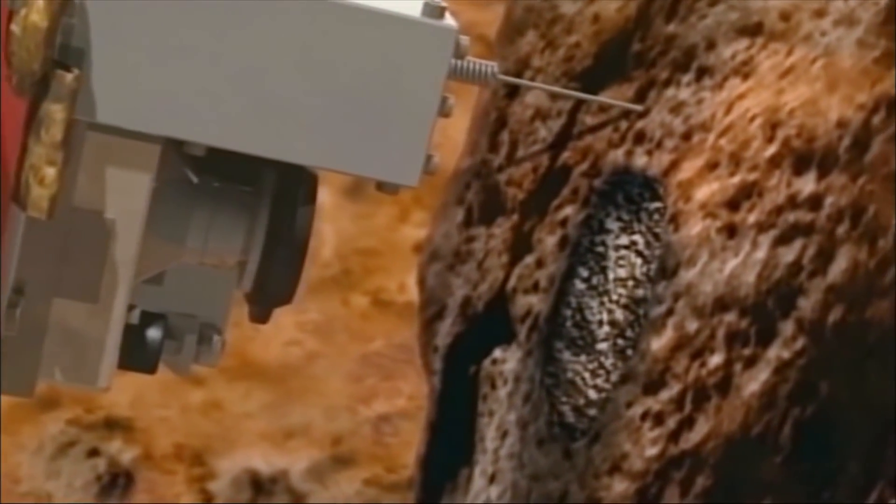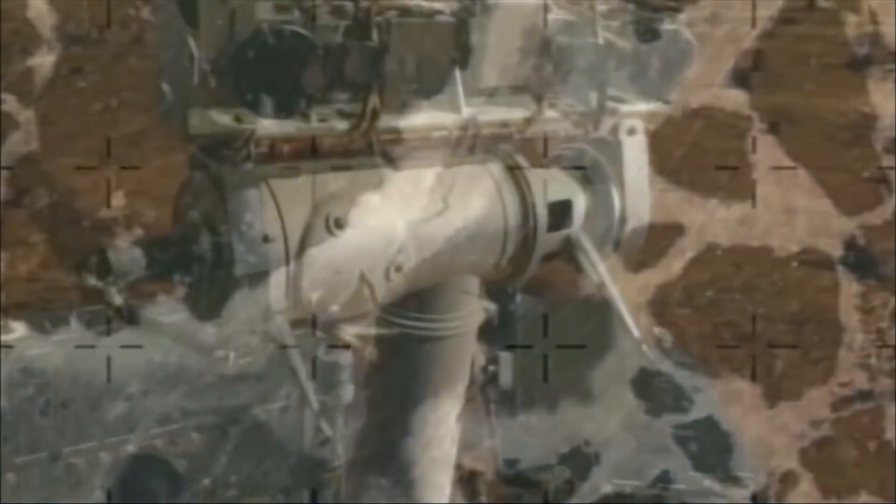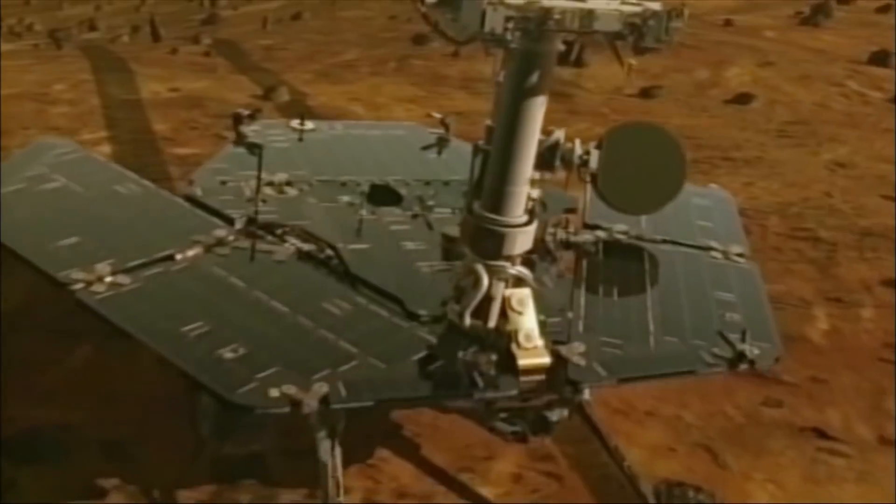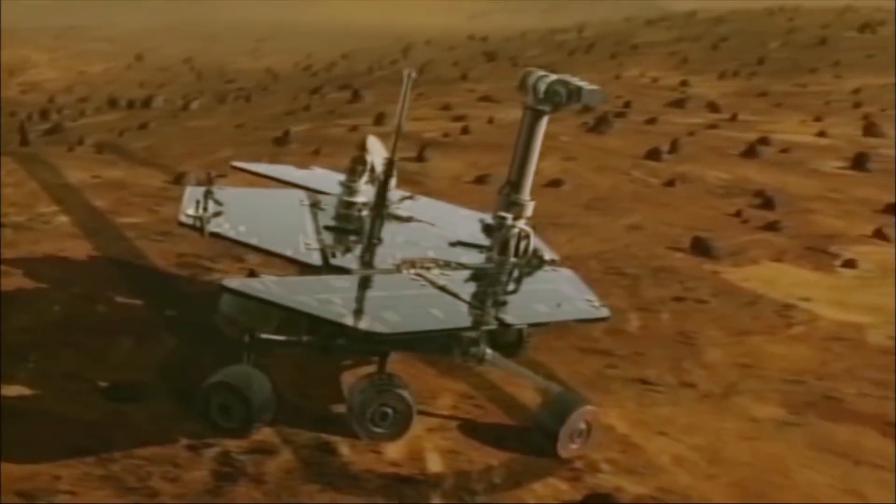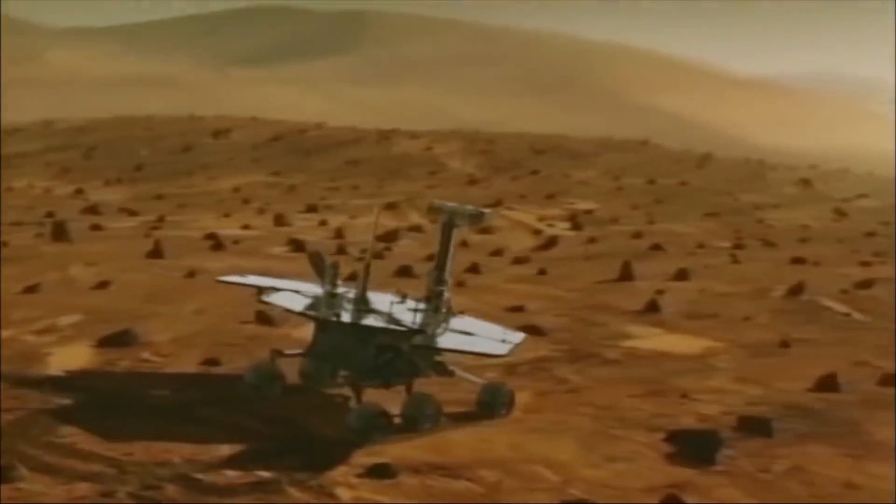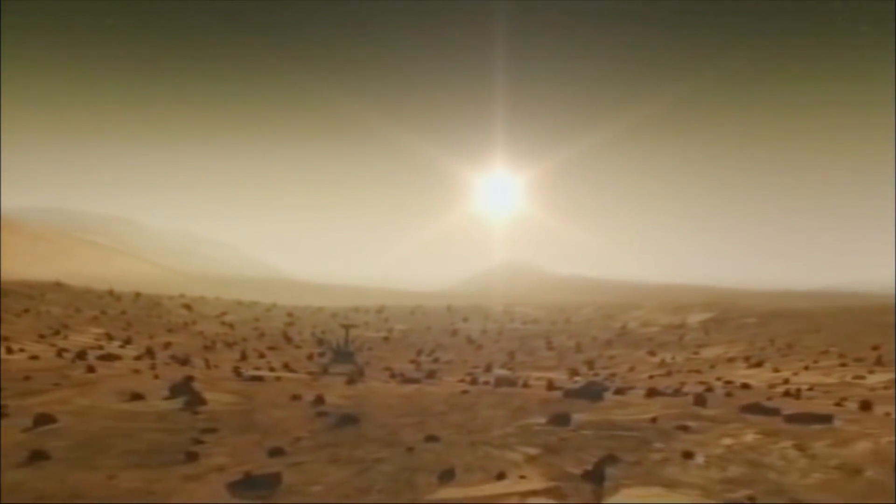Geologic evidence gathered by the Mars rovers and orbiters suggest that 3.5 billion years ago, Mars' watery surface changed dramatically. The once-temperate planet became a cold, dry place, and the water vanished.